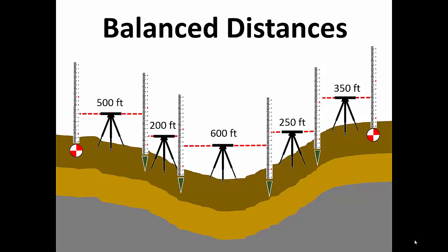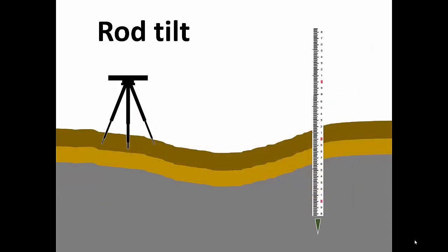Instrument calibration addresses the slope or tilt in the line of sight. Another type of tilt can also degrade our measurement accuracy: rod tilt.